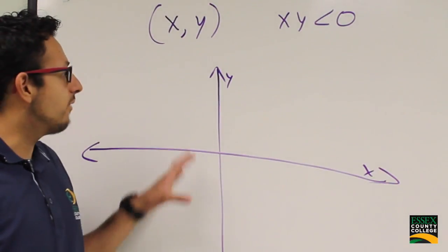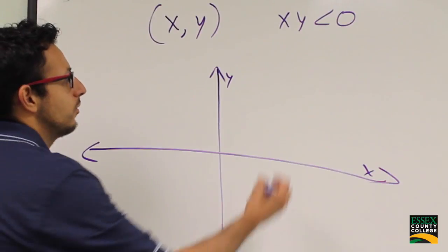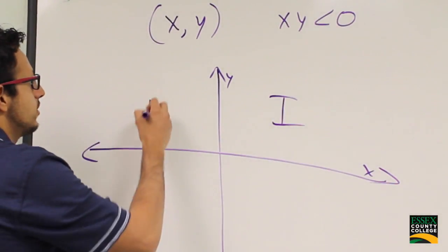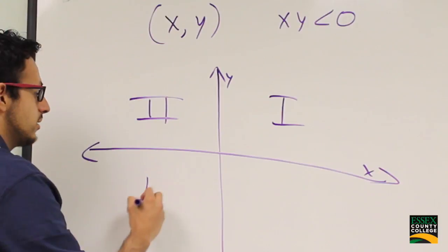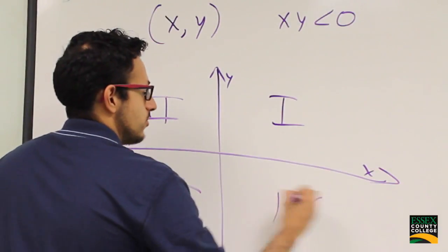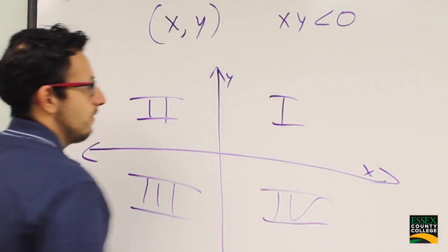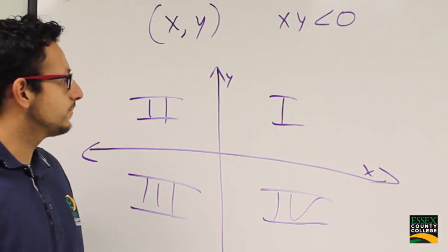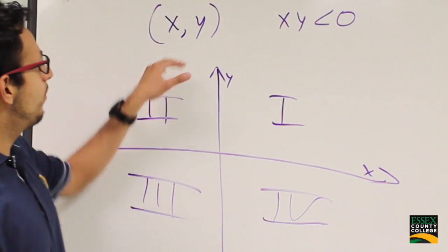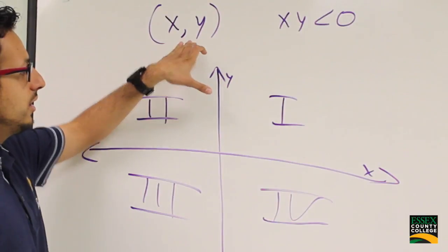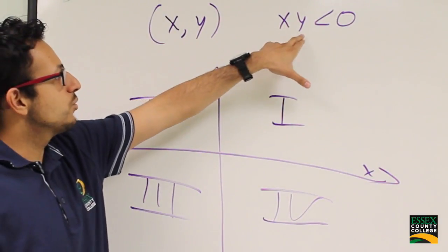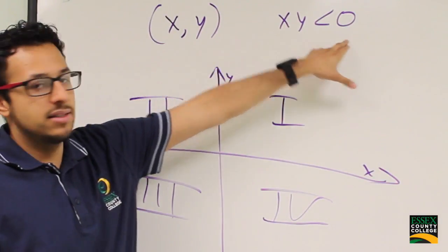So when we draw out our graph, we know that this is quadrant 1, this is quadrant 2, this is quadrant 3, and this is quadrant 4. We have to figure out where the point (x, y) is located when x times y is less than 0.